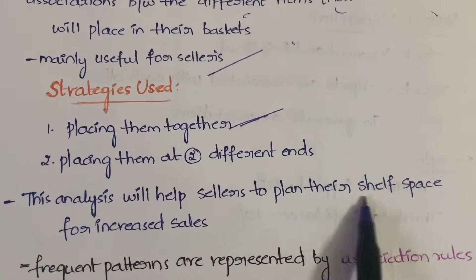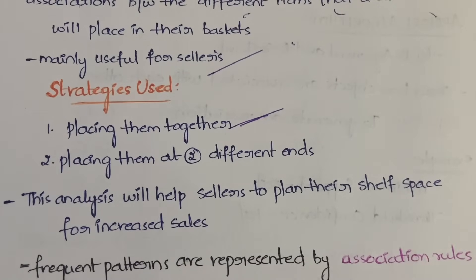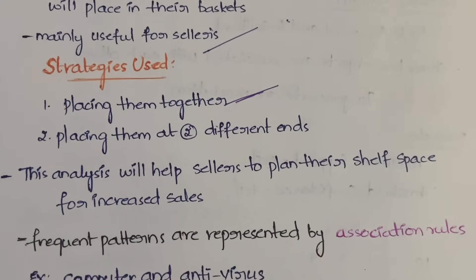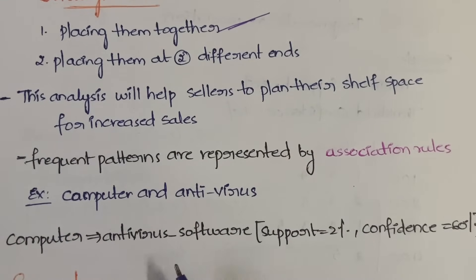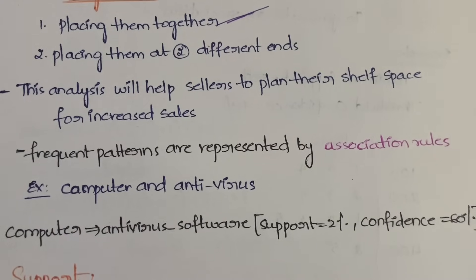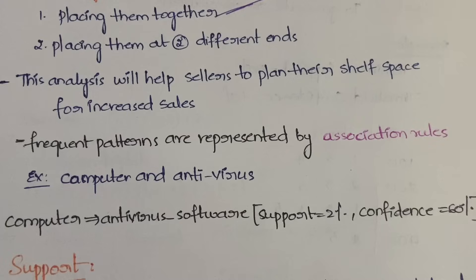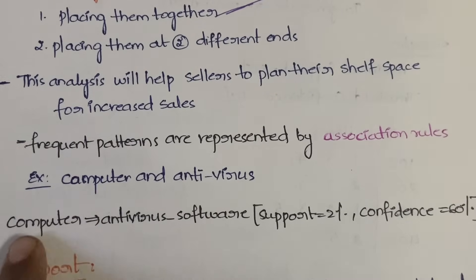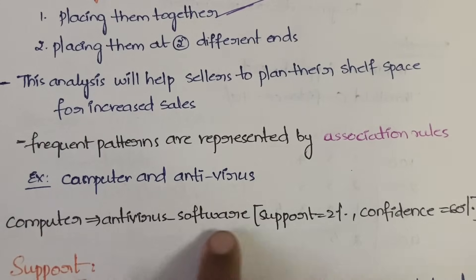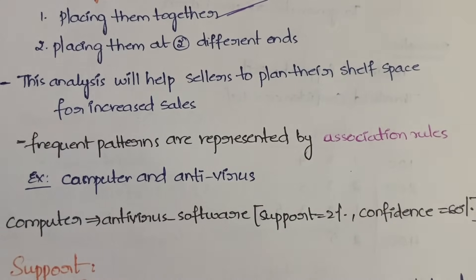Sellers also use this to plan their shelf space — how to organize things on shelves. Frequent patterns are usually represented using association rules. An association rule describes the relationship between two items. For example: if a person purchases a computer, they also tend to purchase antivirus software, a keyboard, mouse, or other accessories. We write this as: Computer → Antivirus Software, with support = 2% and confidence = 60%.